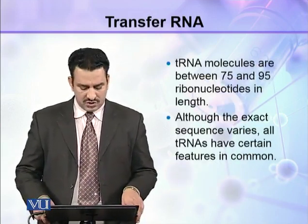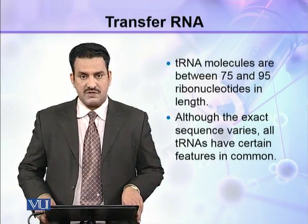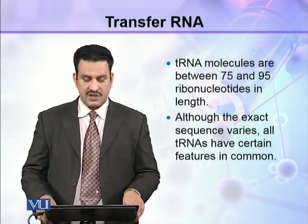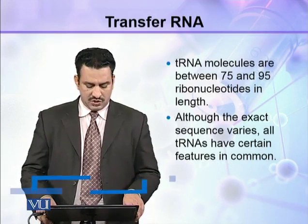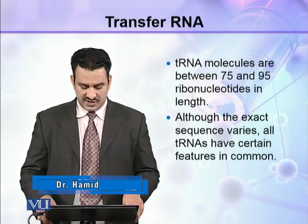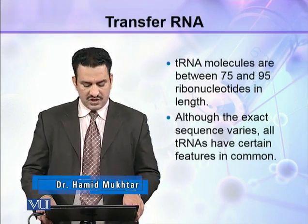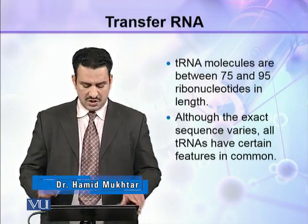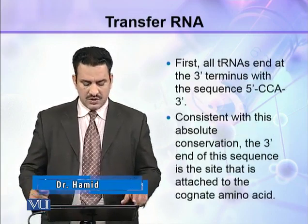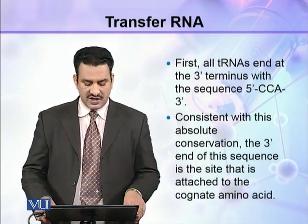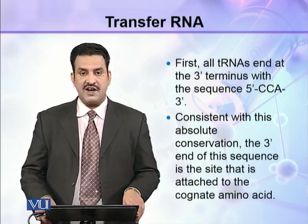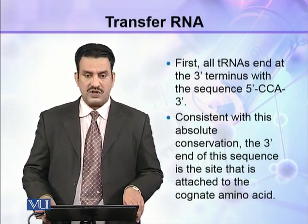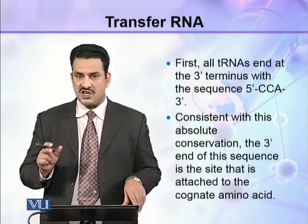tRNA molecules are between 75 and 95 nucleotides in length. Although the exact sequence varies, all tRNAs have certain features in common. First, all tRNAs end at the 3' terminus with the sequence 5' CCA.